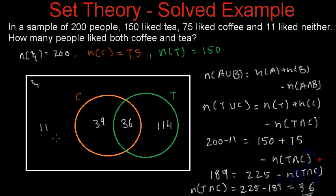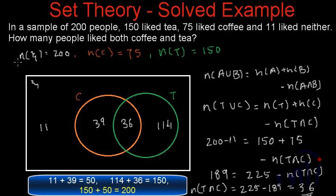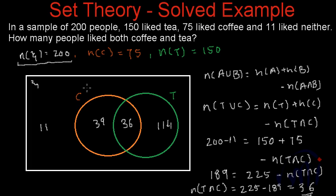There are 11 people among those 200 who don't like anything. A key checkpoint for these kinds of problems is that all numbers in the Venn diagram should total up to the cardinal number of the universal set. 39 plus 11 is 50; 114 plus 36 is 150; and 150 plus 50 is 200. That proves our Venn diagram is correct, and the answer — people who like both coffee and tea — is 36.